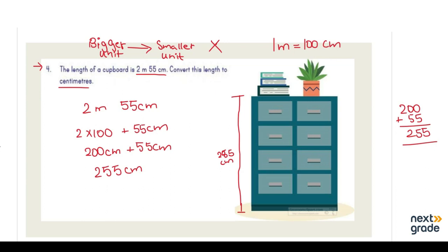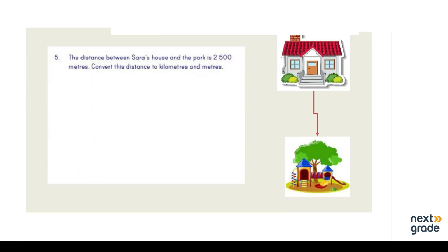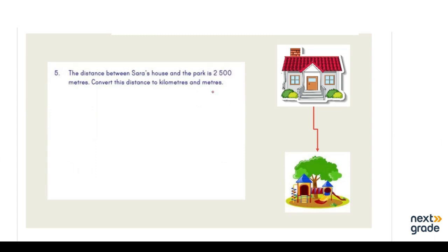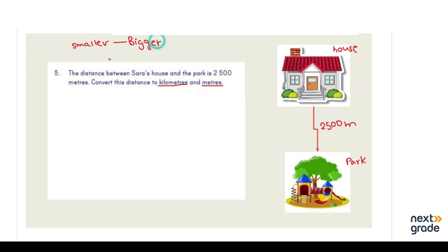Let's move on to the next example. The distance between Sarah's house and the park is 2500 meters. We have to convert this distance to kilometers and meters. When converting to a bigger unit, we divide. So we write: 1 kilometer equals 1000 meters, and the question gives us 2500 meters.